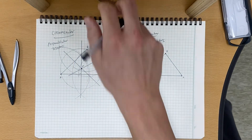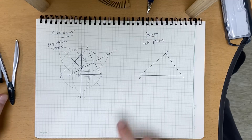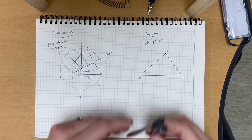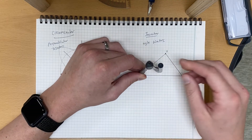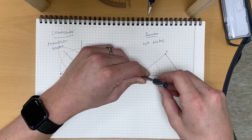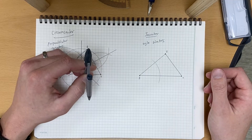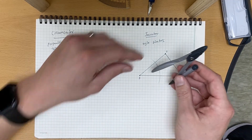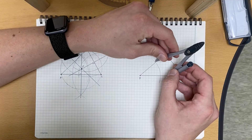Let's start with angle A — we're going to bisect angle A. To do that, we make sure our needle is on A and draw an arc that intersects both rays of the angle. Now we take our compass and open it to the distance of our intersections.